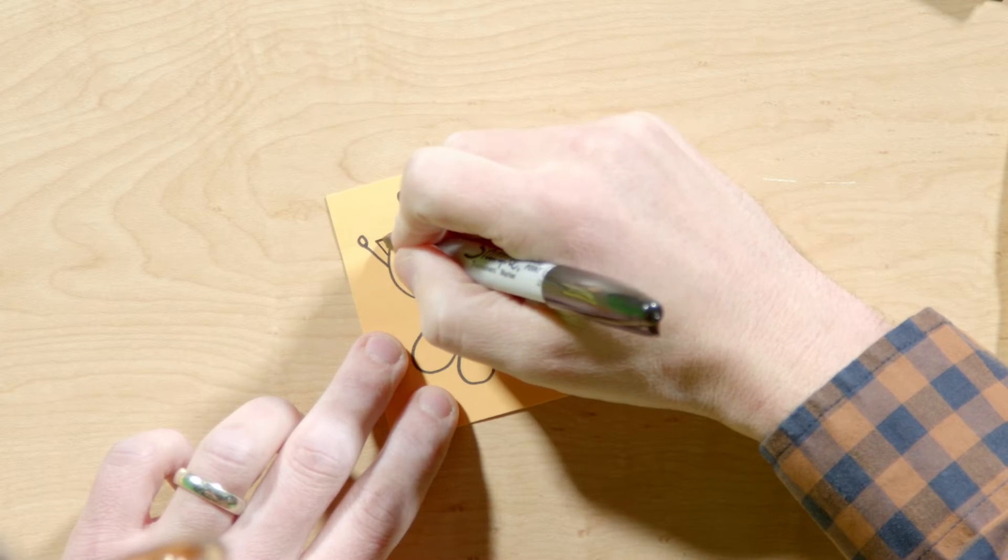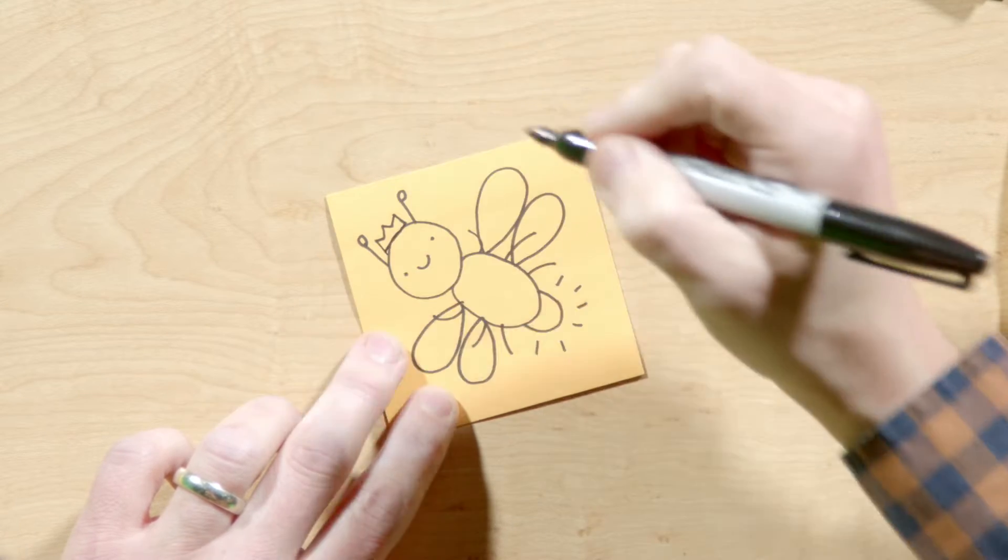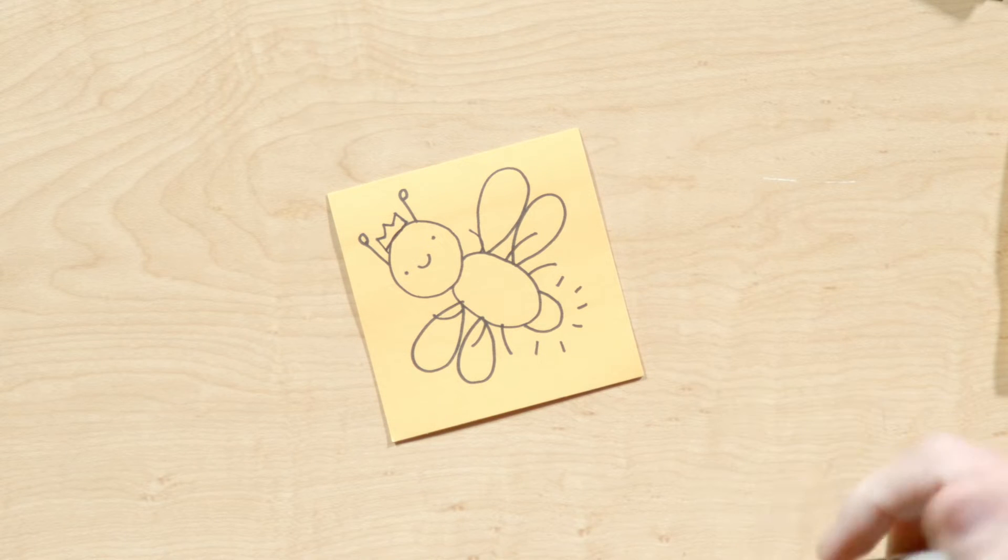Now the royal part. I could add a royal scepter or a long robe. Definitely a crown. There it is. A royal lightning bug.